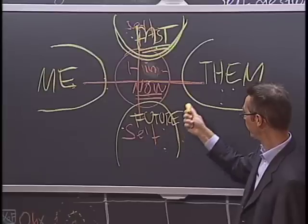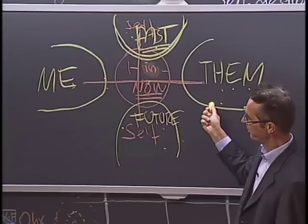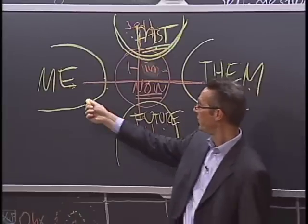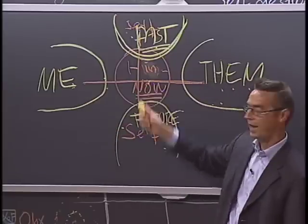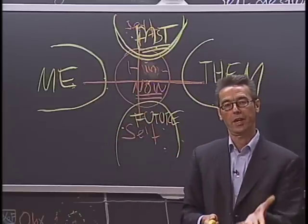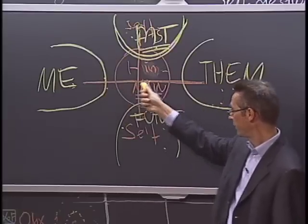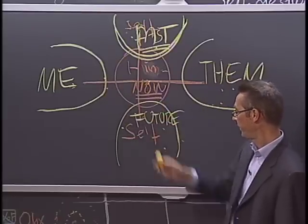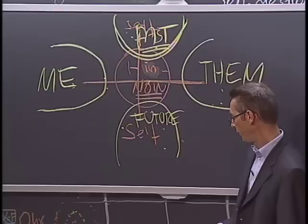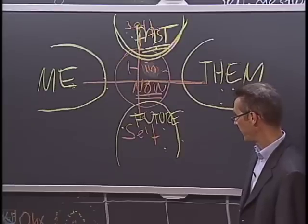So those are the four powerful distractions: the past, the future, them, and me. These disconnect us from that pregnant moment, the 'I in now,' that deepening of the social field that opens up new possibility within and among us.